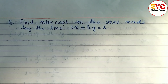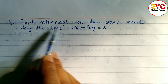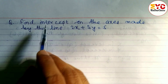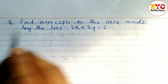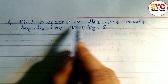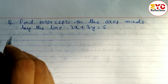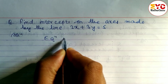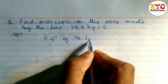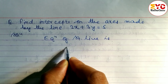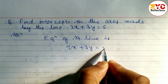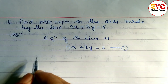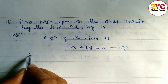Hello everyone. This question is taken from the equation of a straight line. We have to find out the intercepts — that means x-intercept and y-intercept — made by the line. The equation given is 2x + 3y = 5, which we'll call equation 1. We have to find out the x-intercept and y-intercept from this.